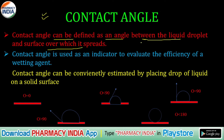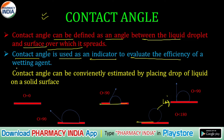The contact angle is the angle formed by a liquid drop on a surface. We are talking about the liquid drop and the surface, and the contact angle is used as an indicator to evaluate the efficiency of a wetting agent.